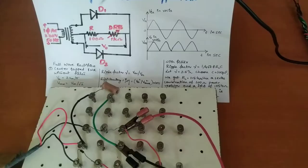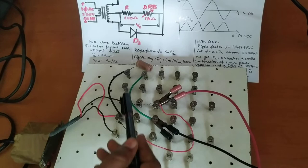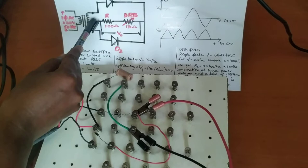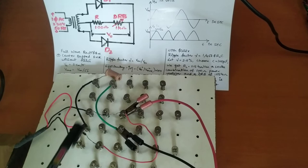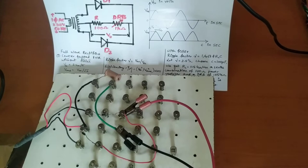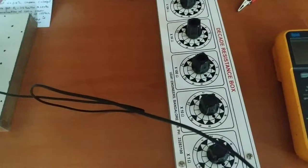Now let us do the connections. You can see the transformer secondary part has three terminals. From each of the two high potential terminals (marked as 50 ohm on each side with a 0 ohm center), we connect to the anode of each respective diode. The cathodes are shorted by a wire. From the cathode junction, it is connected to the 100 ohm power resistor, and from the other end to the DRB box. The other two terminals of the DRB connect back to the zero potential terminal.